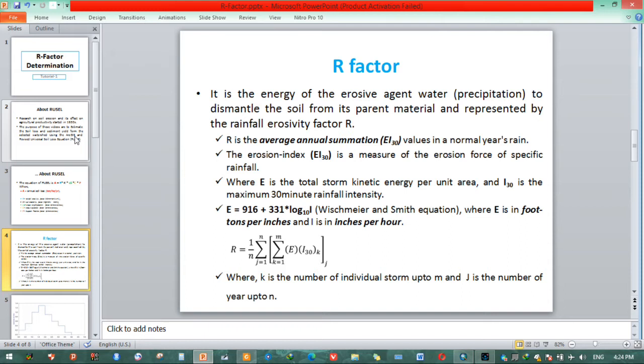E, which is the total storm kinetic energy per unit area, can be correlated with rainfall intensity on an hourly basis according to Wischmeier and Smith's relations.